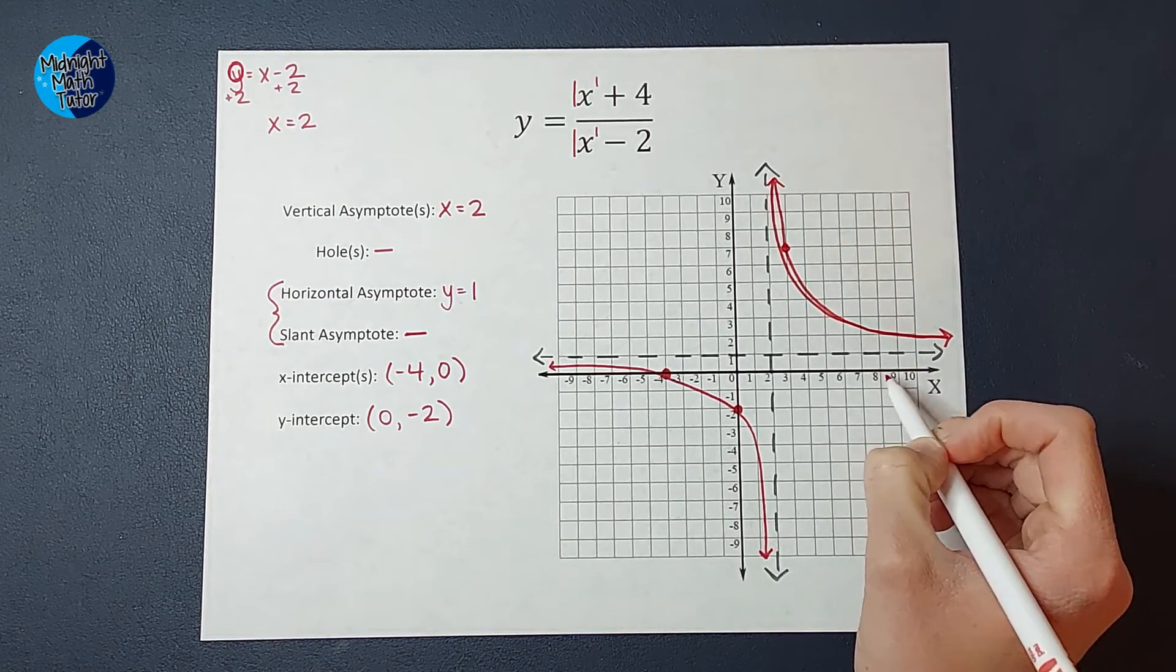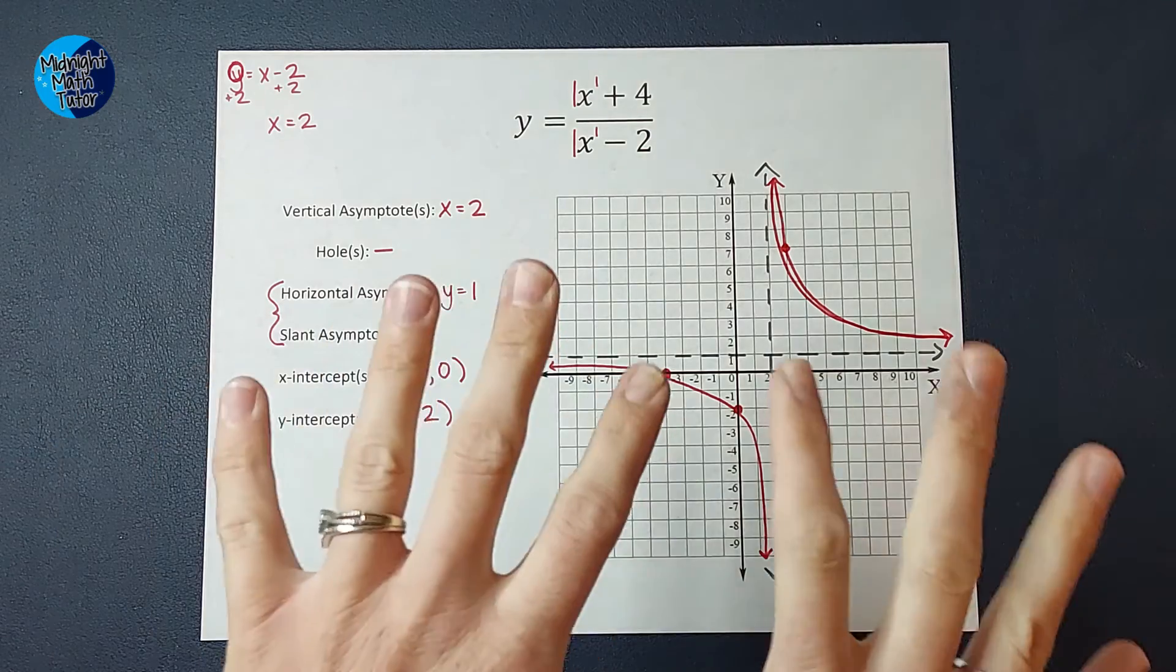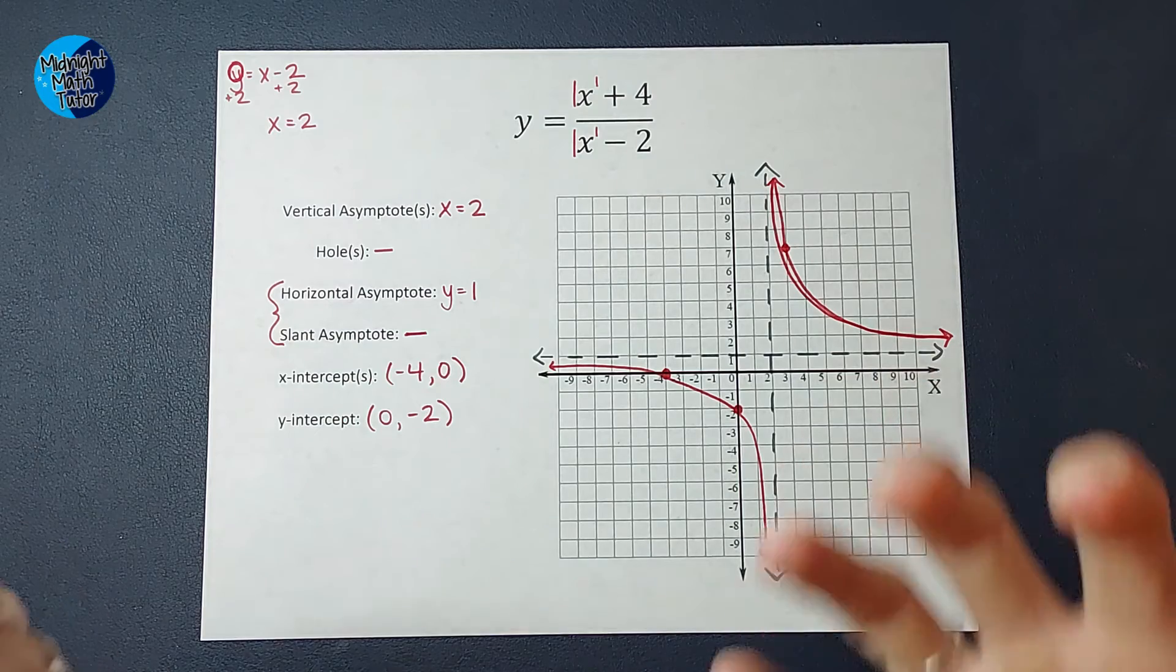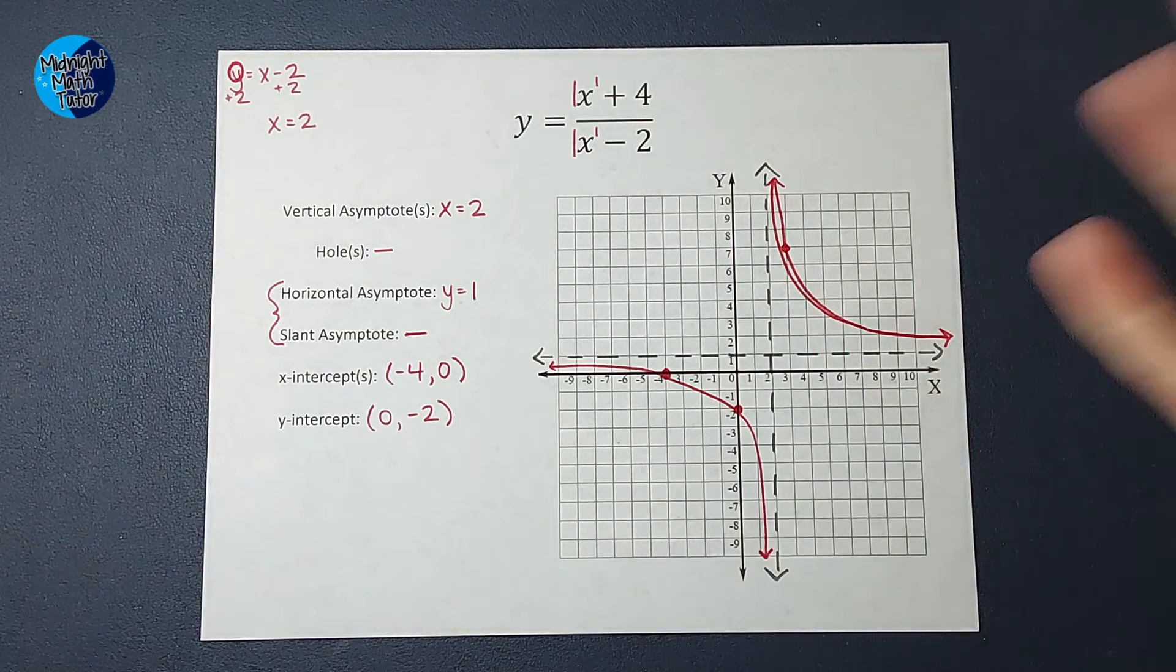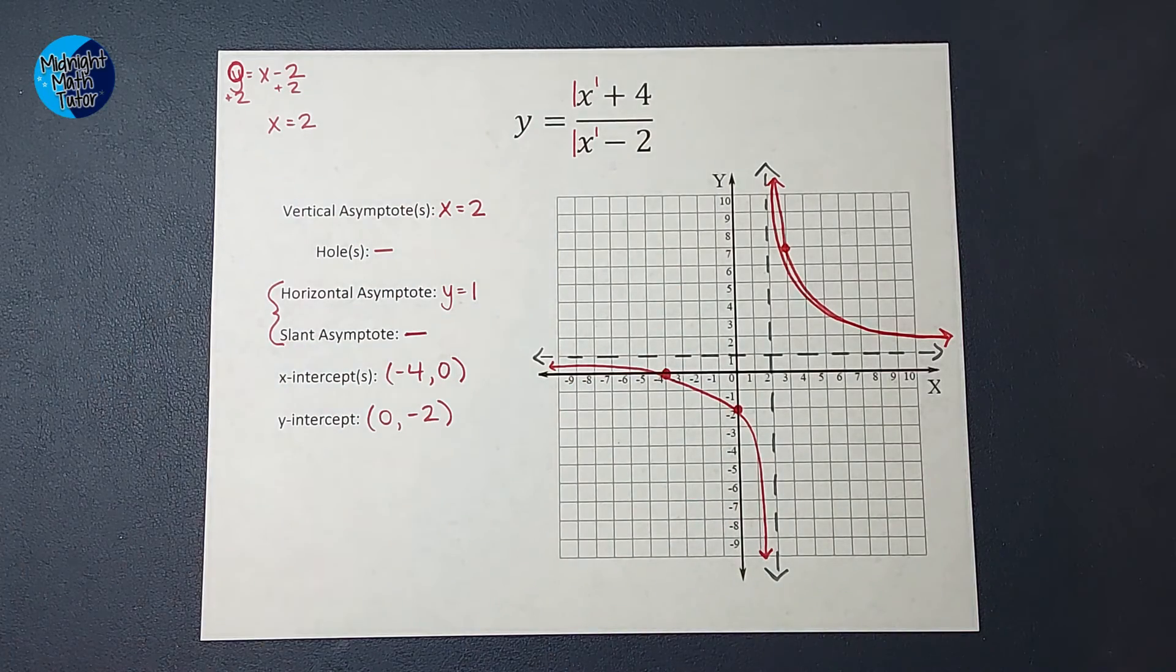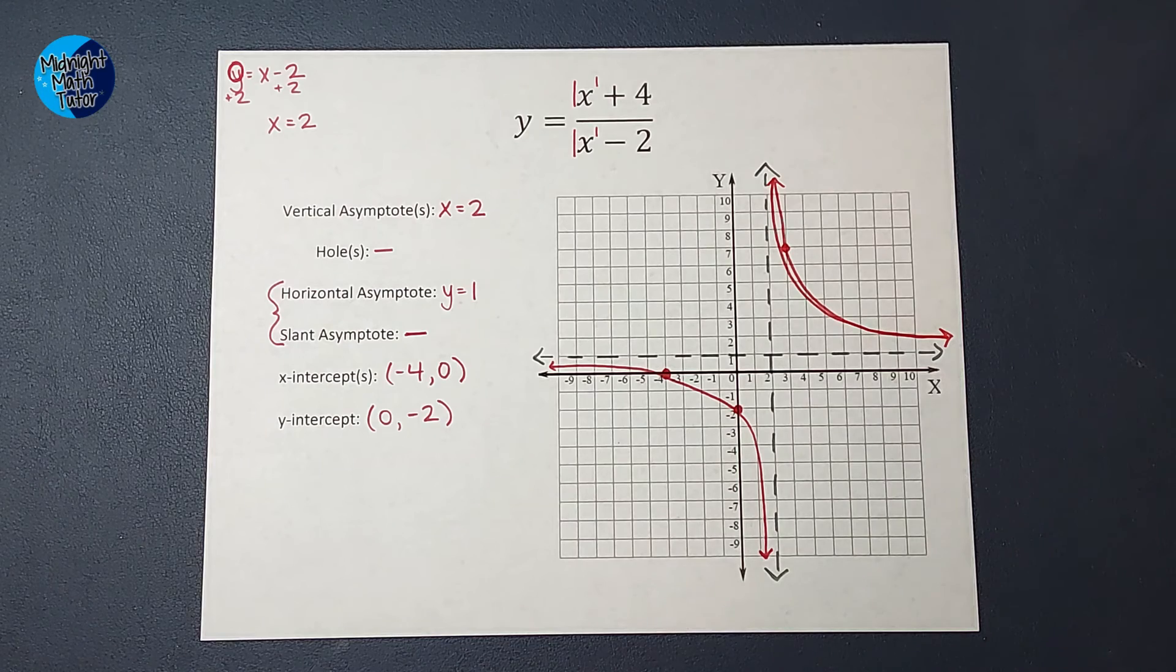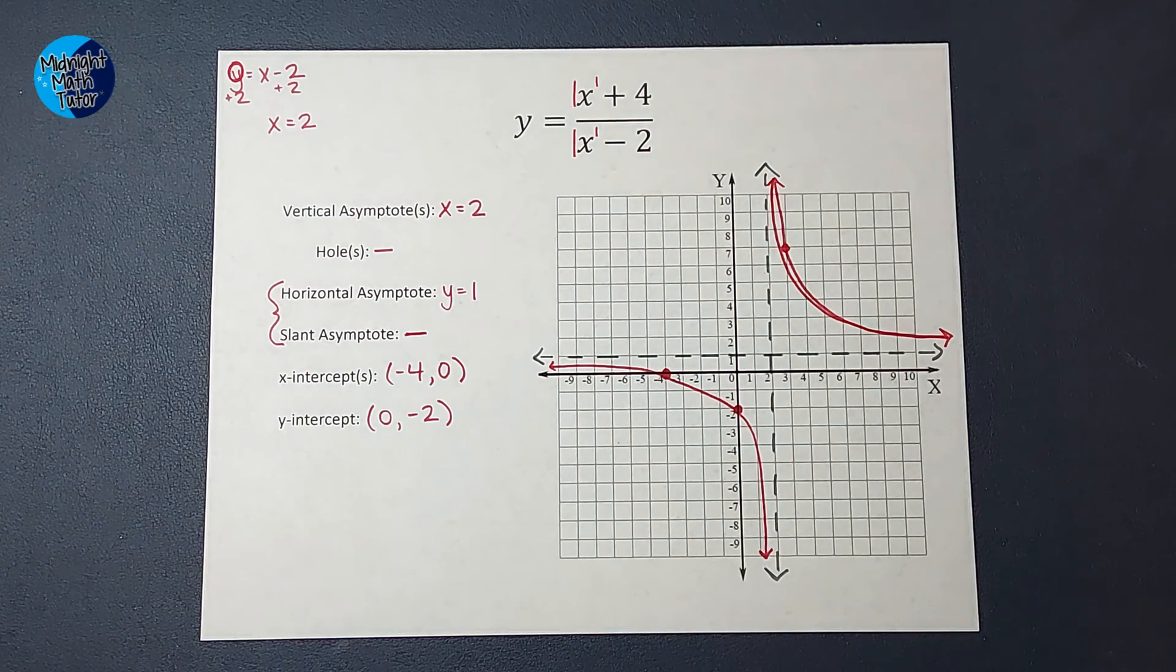I hope this made sense. Another thing I like to do whenever I'm graphing these is once I get a graph down, which remember these are a general graph, they don't have to be perfect. Your teacher probably wants just a general idea of what this graph looks like. Once you have that, I like to either plug it into a graphing calculator or into some sort of like desmos to help me make sure that I got the graph right. And if my graph is off, go back and figure out where I got off. So that's a good habit to get into is after you graph it by hand, plug it into a graphing calculator to make sure that you're on the right track. I hope this made sense. I will link a whole playlist with a bunch of other ones where there's more asymptotes, where we've got slant asymptotes, multiple x-intercepts, all sorts of things. I will link that playlist for you. Thanks!